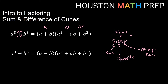Similarly with the difference of cubes formula, we start with a minus. So applying SOAP — Same gives us minus, Opposite gives us plus (the opposite of the minus we began with), and then Always Plus for the last term.